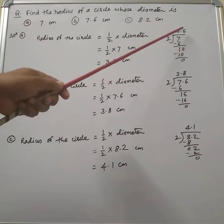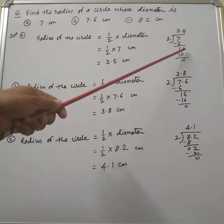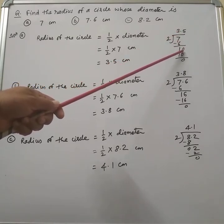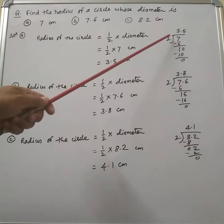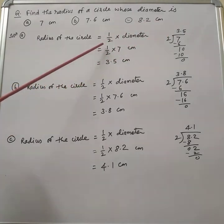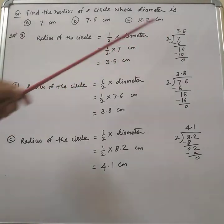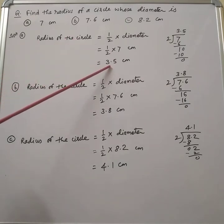So we have to write a decimal point here. If we write the point, then 1 becomes 10. Now 2 times 5 is 10. So if we divide 7 by 2, it is 3.5. Therefore, the radius of the circle is equal to 3.5 centimeters.